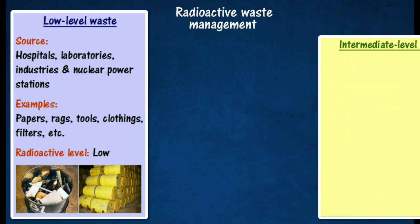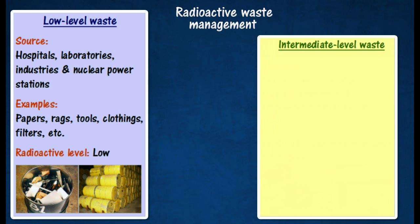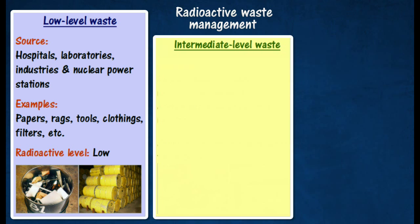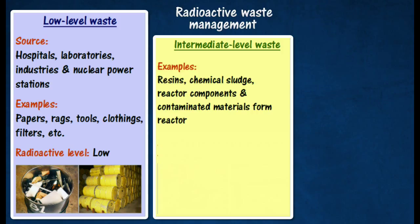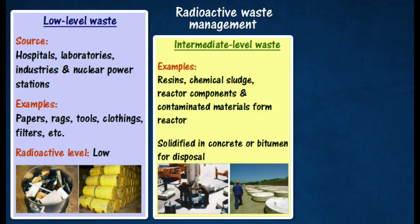Intermediate-level waste contains higher amounts of radioactivity and may require special shielding. It comprises resins, chemical sludge, and reactor components, as well as contaminated materials from reactor decommissioning. Such waste may be solidified in concrete encased containers and dumped in the ocean or buried deep underground.